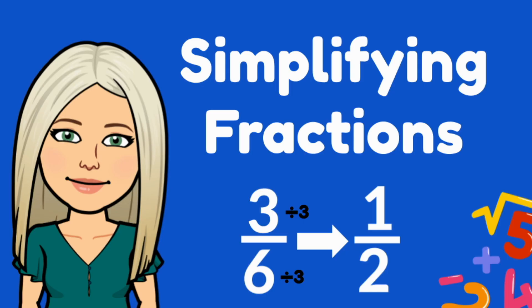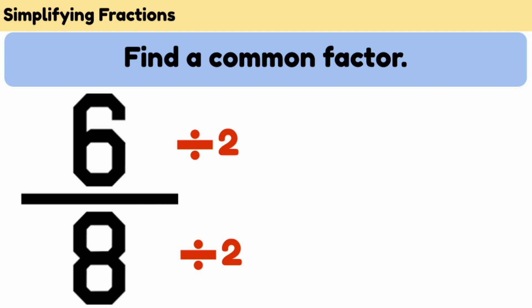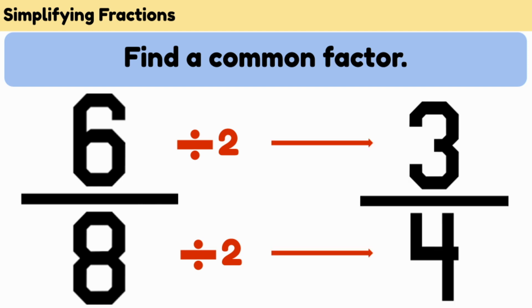Simplifying or reducing fractions. I'm going to show you how to use division to make a simpler equivalent fraction. To do this you need to find a common factor that can divide both the numerator and the denominator. If the numerator and denominator are both even numbers, we know that a common factor is always going to be two.